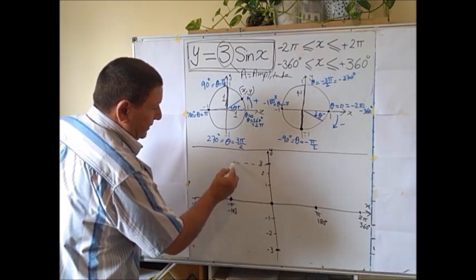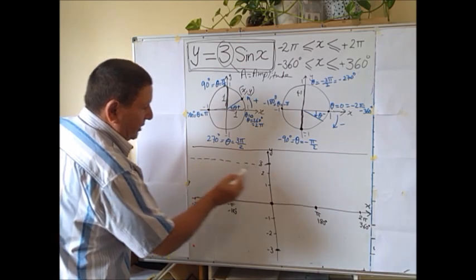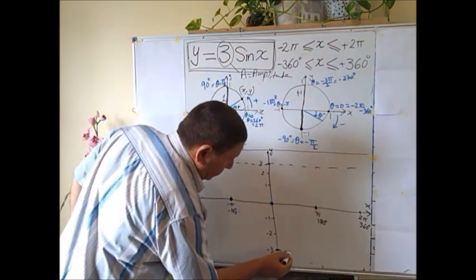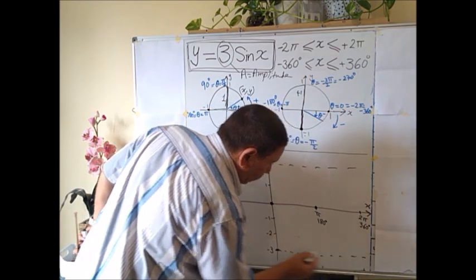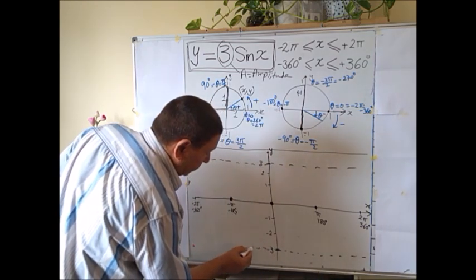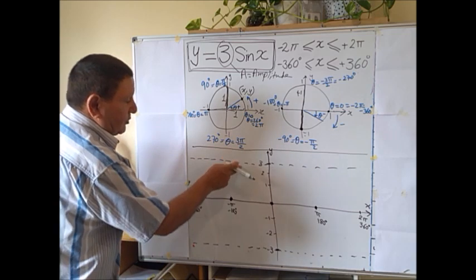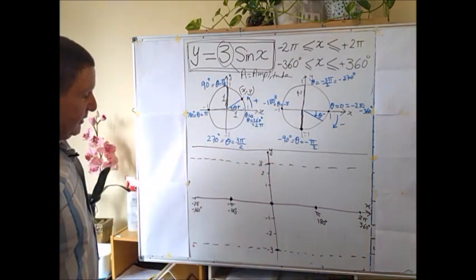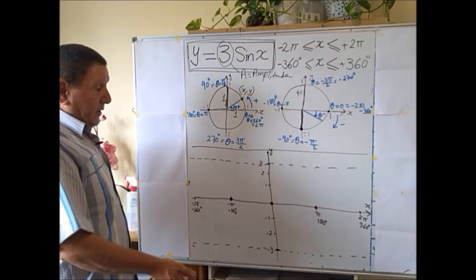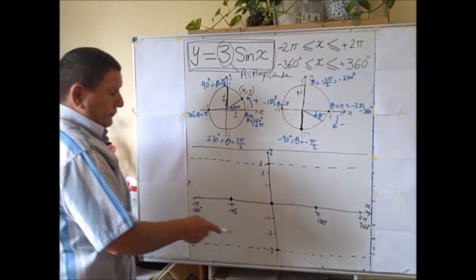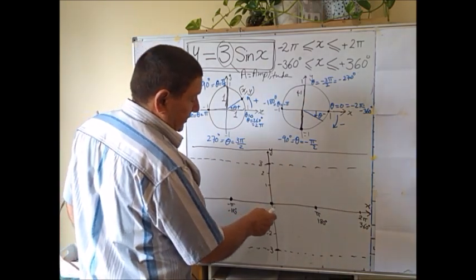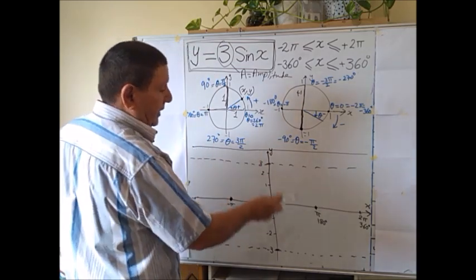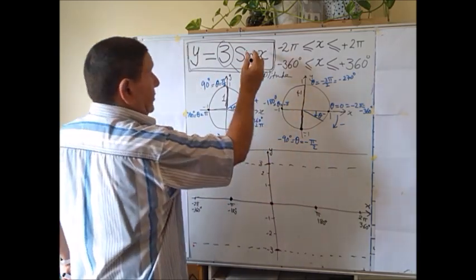To start drawing, we draw construction lines along the maximum and minimum values. Imagine the wave going up and down between these two lines — it's a wave function that oscillates between them.